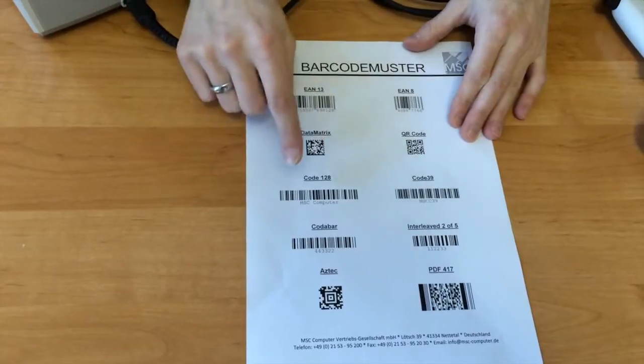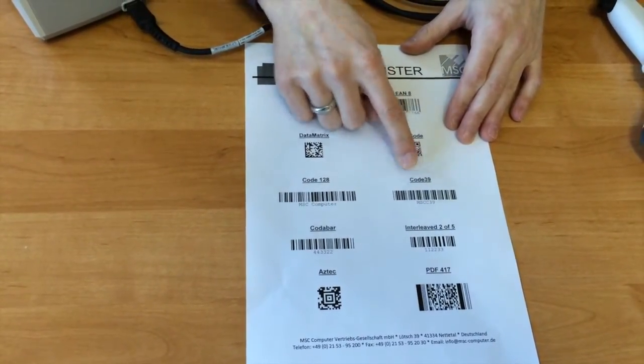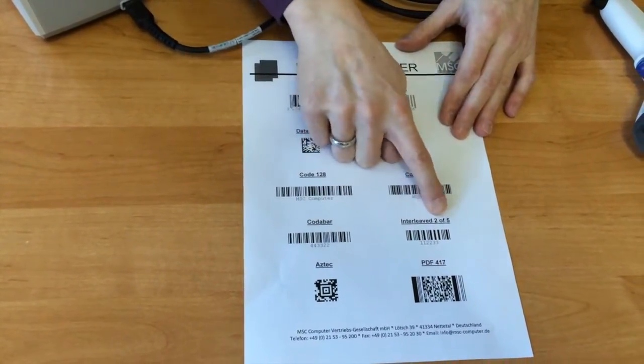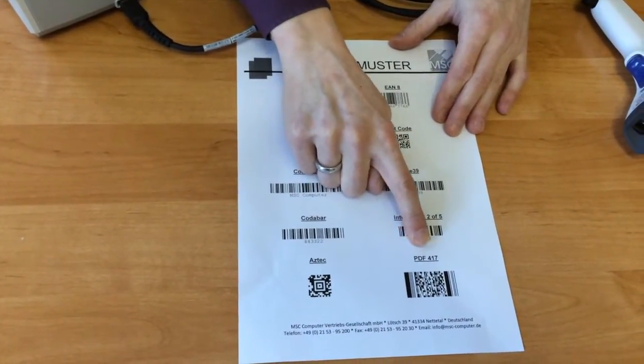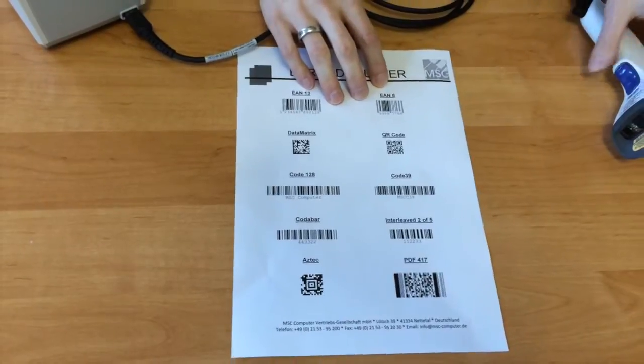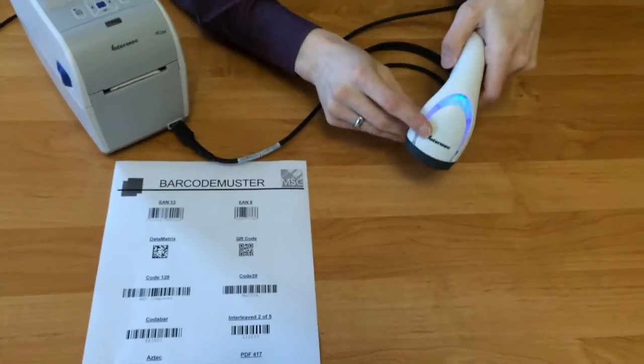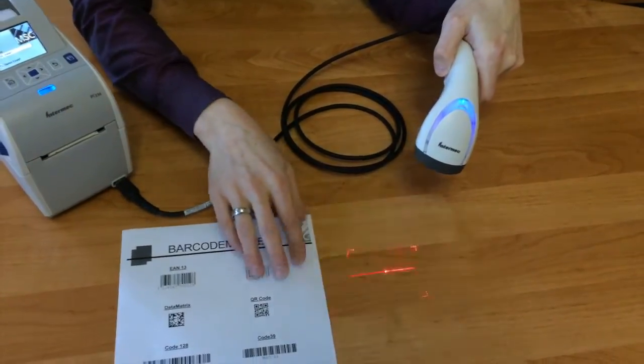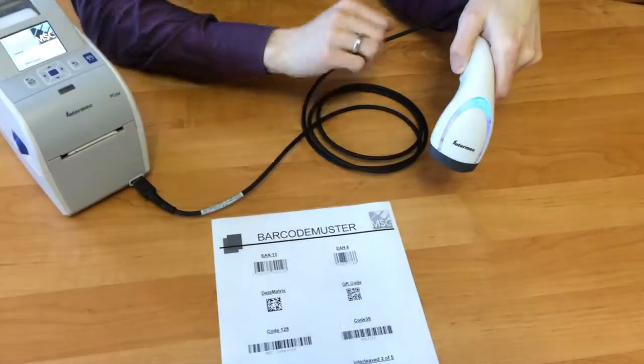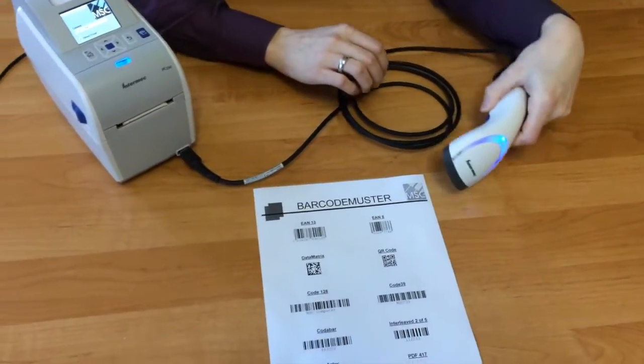We've got simple EAN-13, EAN-8, Data Matrix, QR code, Code 128, Code 39, Codabar, Interleaved 2 of 5, and PDF417. The SG20 that we chose is a 2D scanner, so it will be able to read all of the barcodes available here.